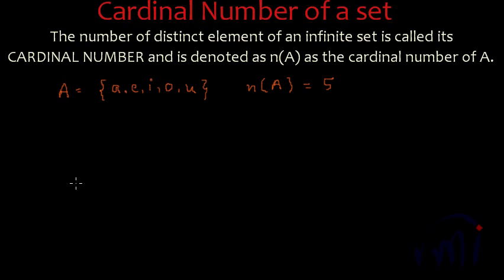And suppose if I have a set B and it is defined as the letters of word floor, F, L, O, O, R. Suppose this is the word, then how you write this set? This set will have one F, one L, one O and one R. This we have discussed earlier. When we write a set, we don't repeat the elements.